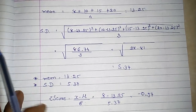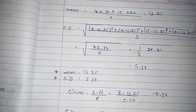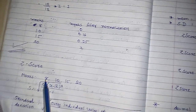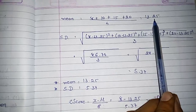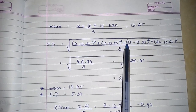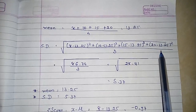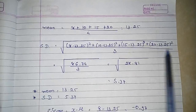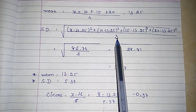Now we have to find out the standard deviation. For standard deviation you deduct the mean from the actual value. So: (8 minus 13.25) squared plus (10 minus 13.25) squared plus (15 minus 13.25) squared plus (20 minus 13.25) squared, divided by n minus 1. We have 4 total values so n minus 1 equals 3, so divide by 3.